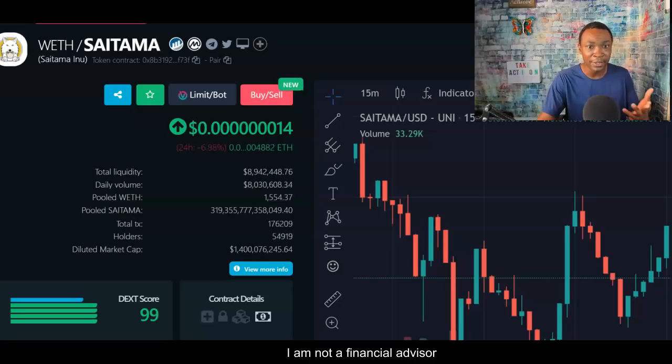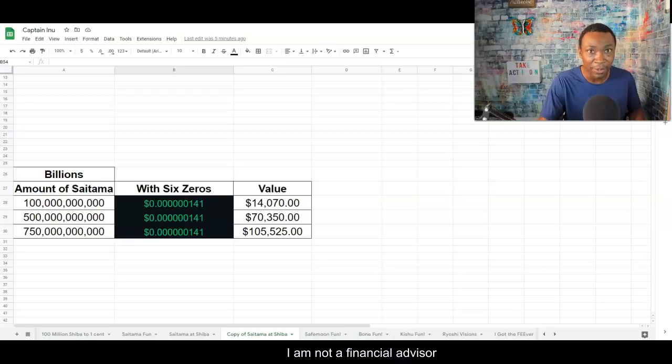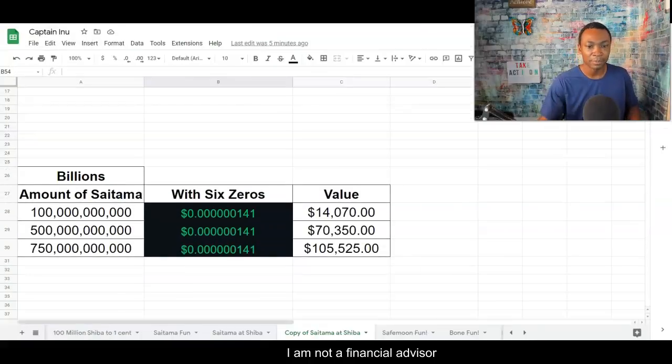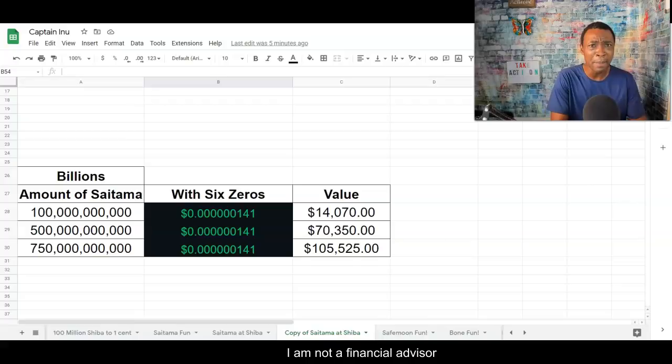And look at this. I go back here, seven zeros. Seven zeros. And I go back here, six zeros. Not bad at all. And I believe that will happen in the future. $105,000.